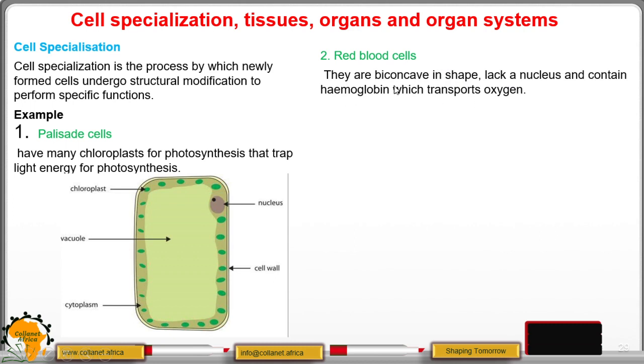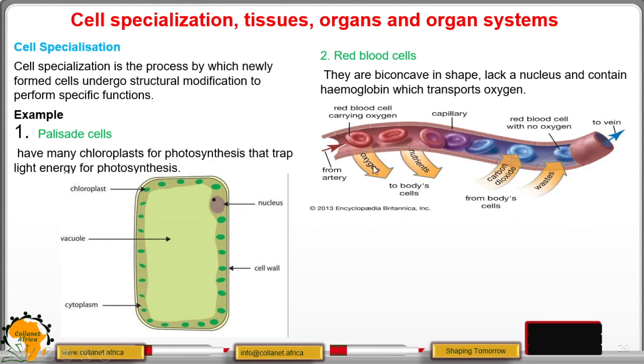So this hemoglobin is the pigment that gives blood the red color and combines with oxygen to form oxyhemoglobin. And that is the form in which oxygen is transported in our bodies. You can see it is biconcave. It has something like a depression, that is the biconcave shape.